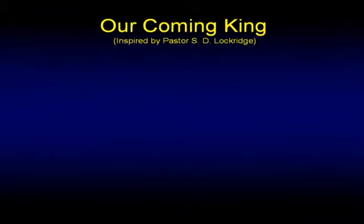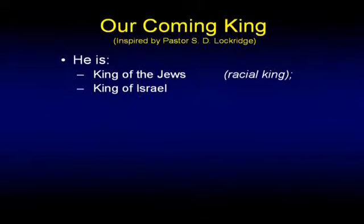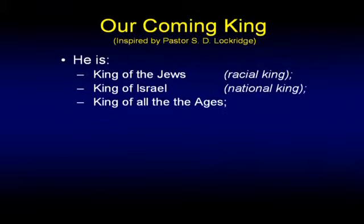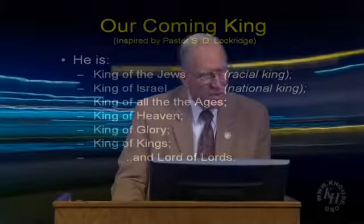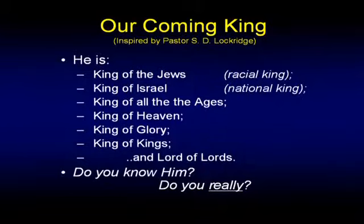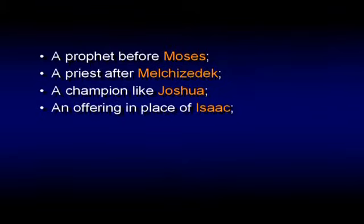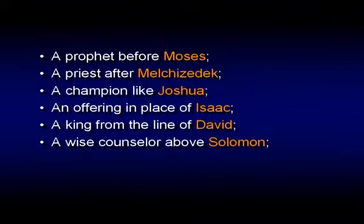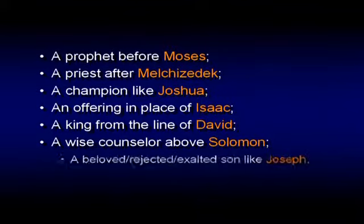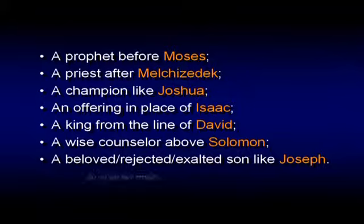This little tour de force was inspired by Pastor Lockridge. Speaking of our coming King: he's the King of the Jews — a racial King. People wonder why there's a menorah in our house — 'Are you guys Jewish?' No, but the God we worship is. He's the King of Israel, a national King. He's King of all the ages, the King of heaven, the King of glory, the King of kings, and the Lord of lords. The question is: do you know Him? He's a prophet before Moses, a priest after the order of Melchizedek, a champion like Joshua, an offering in the place of Isaac, a king from the line of David, a wise counselor above Solomon, and beloved, rejected, and exalted like Joseph — and of course far more.